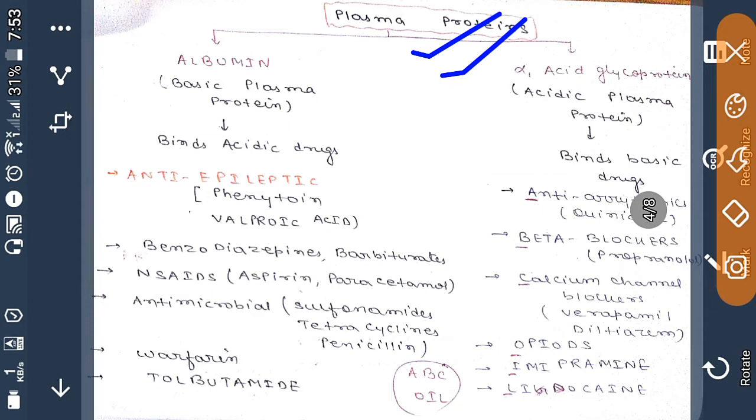I'm going to discuss plasma proteins, the binding of drugs with plasma proteins. Drugs basically bind with two types of protein: the first one is albumin and the second one is alpha-1 acid glycoprotein. Albumin is basic plasma protein, so it will bind acidic drugs mainly. Whereas alpha-1 acid glycoprotein, the name itself suggests acid, so it binds mainly basic drugs.